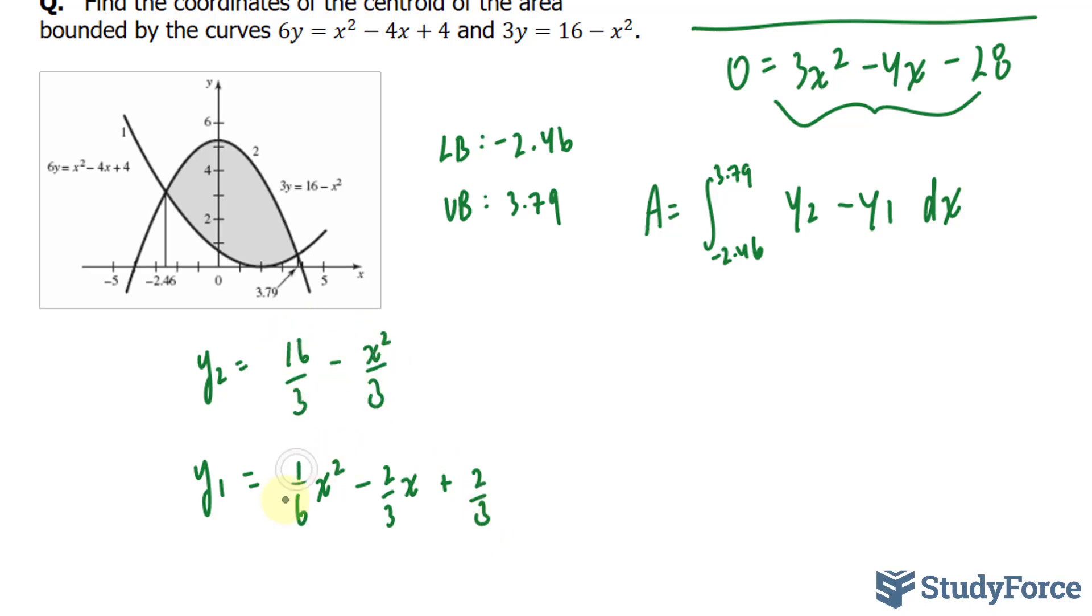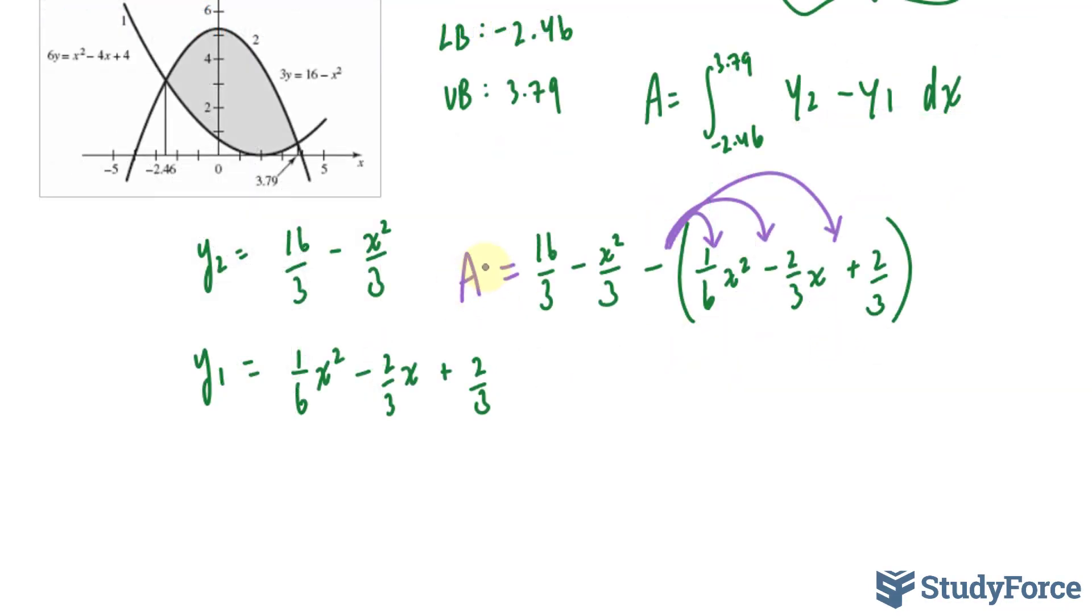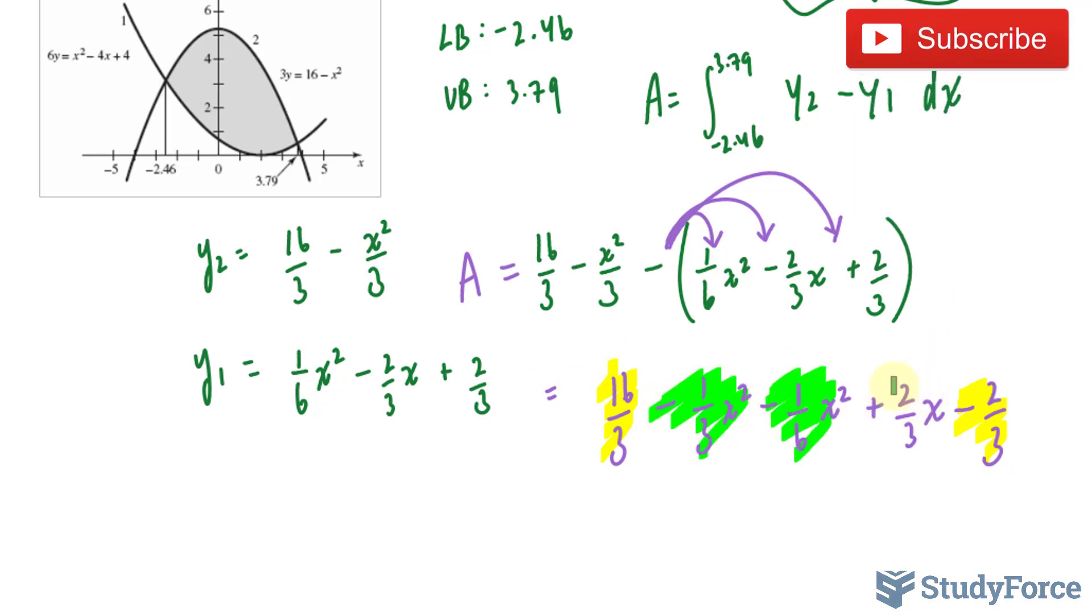I'm going to subtract this now from here. And whatever I find, I'll input it into here. Giving us 16 over 3 minus x squared over 3 minus, now all of this, I'll distribute this negative to this term, this term, and this term. This will give me the area. And then I'll collect like terms. This is a like term with this. These two terms are alike. And this term is on its own.